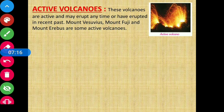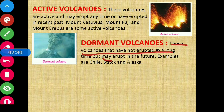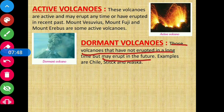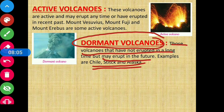The second type is dormant volcanoes – those volcanoes that have not erupted in a long time but may erupt in the future. There is a possibility of future eruption but no recent activity. Examples include volcanoes in Chile, Cotopaxi, and Alaska.